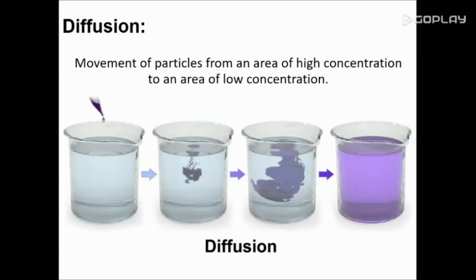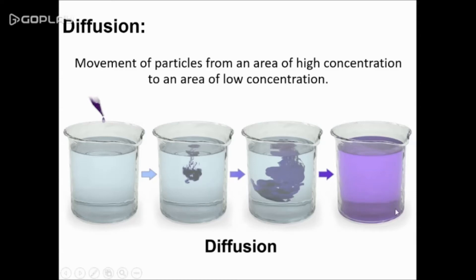One way to think of this is to think about adding a drop of food coloring to a beaker of water. When you first add the food coloring, it will be an area of high concentration, and over time the dye is going to spread itself out to areas of low concentration, eventually resulting in your beaker of water turning a particular color.